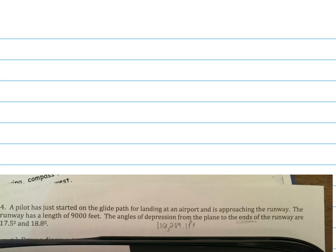So it says the pilot has just started on the glide path for landing at an airport and is approaching the runway. So here's the runway over here. There's the start of the runway. There's the end of the runway.